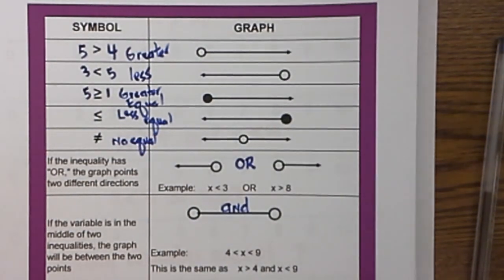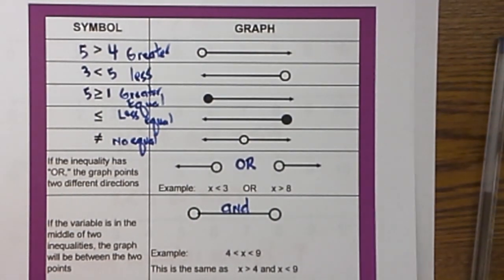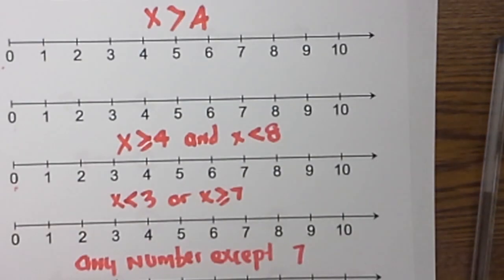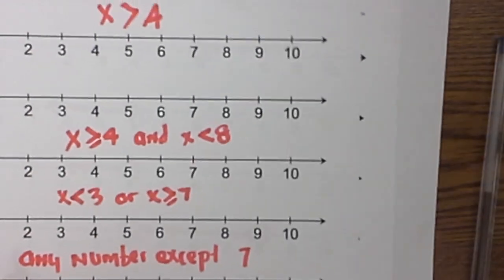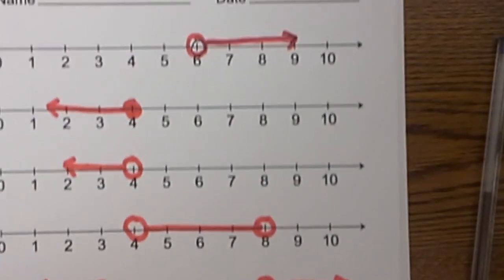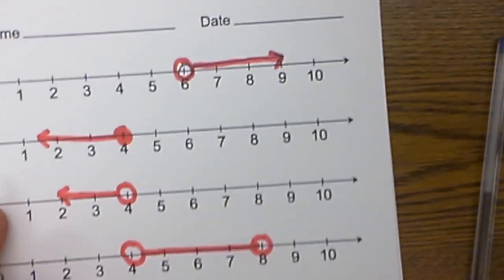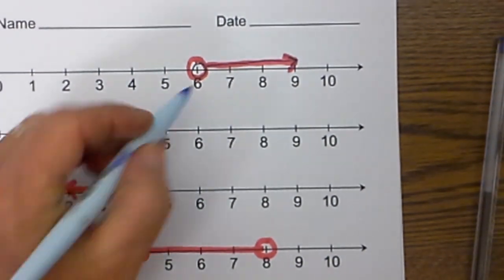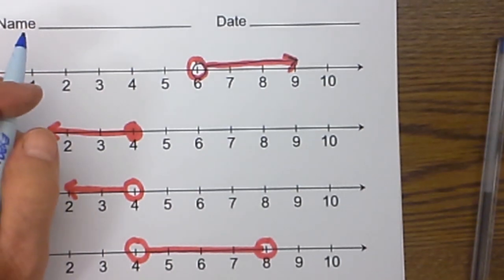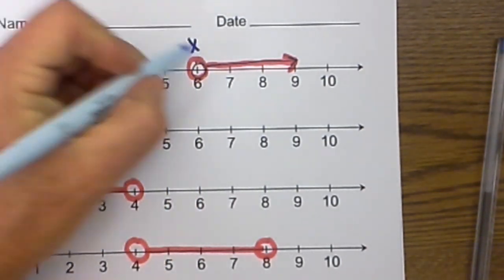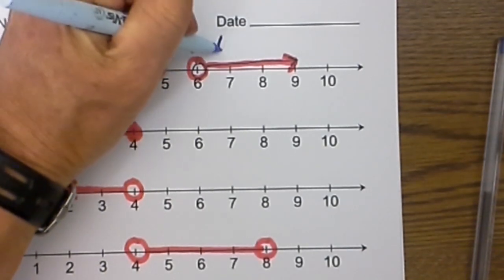So now let's look at a couple of examples. First, we will look at some graphs and write them, and then we will look at some inequalities and graph them. Let's first jump to this first example here. How would you write this first number line? It is open, which means it is greater than, so it would be x is greater than 6.